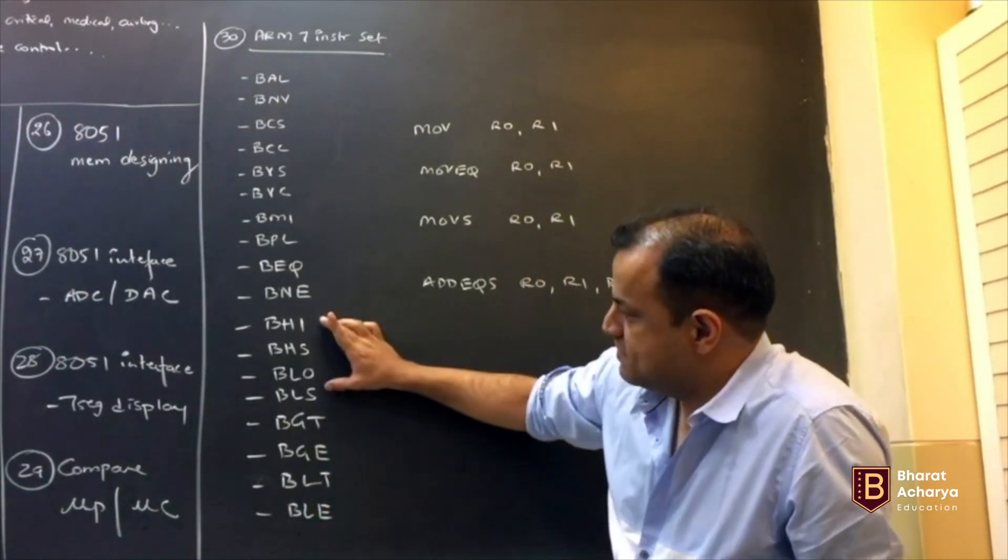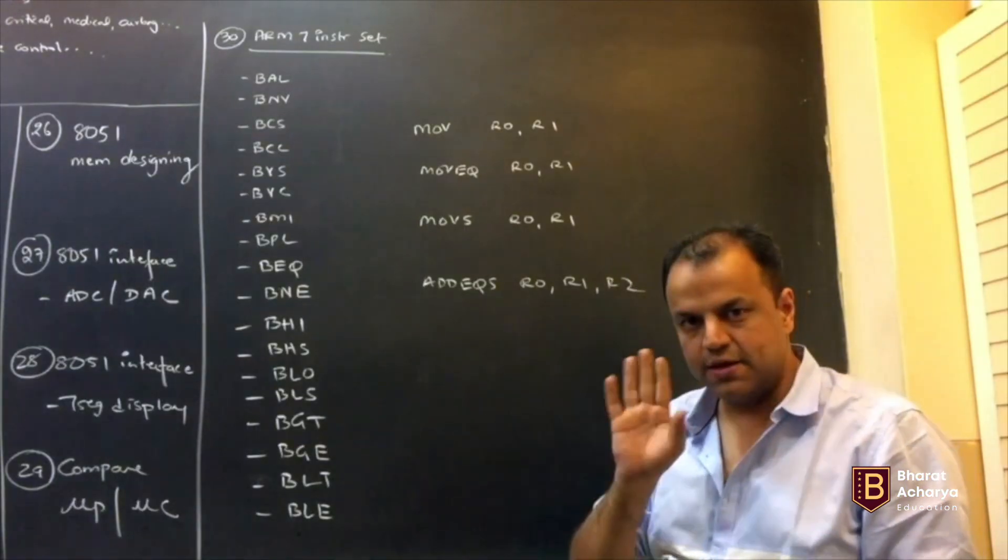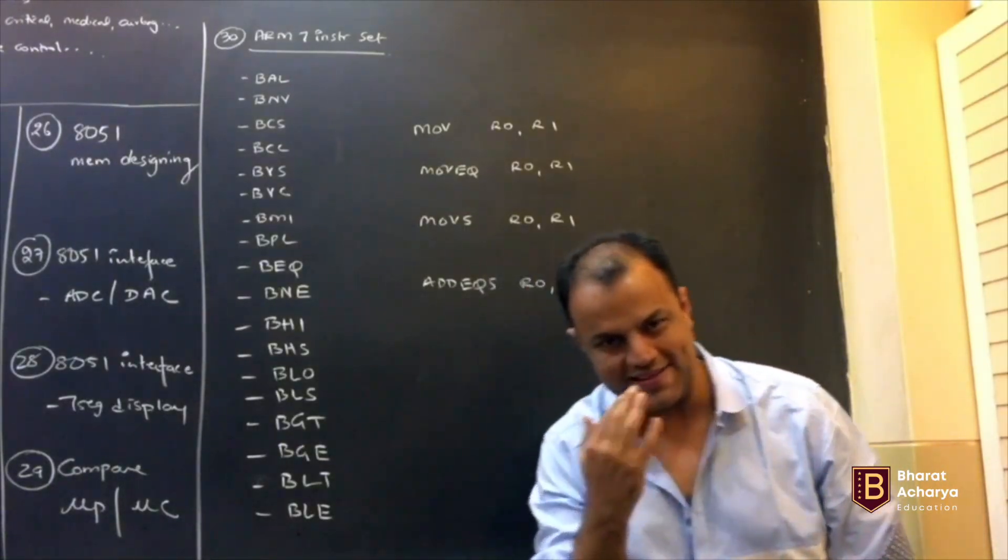Now, these four seem to be the same as these four. These are for unsigned numbers. These are for signed numbers. Now listen, listen. Now you will know why I said this. Listen.